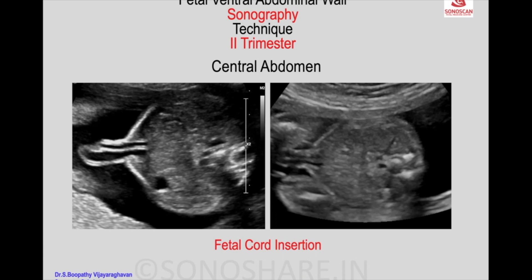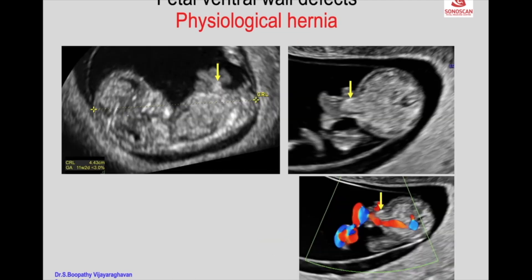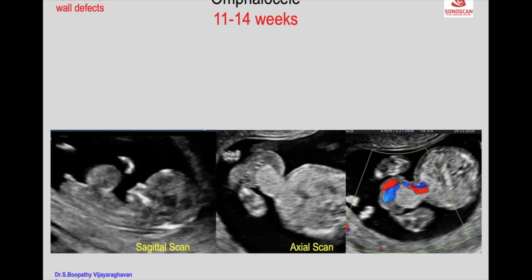In the second trimester, an axial scan of the central abdomen shows bowel herniating into the cord insertion site, confirmed by color Doppler. This physiological hernia usually resolves by 11 to 14 weeks. There is herniation of abdominal contents into the base of the umbilical cord.